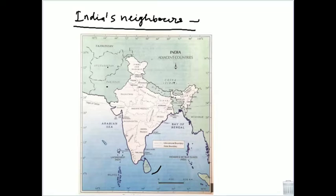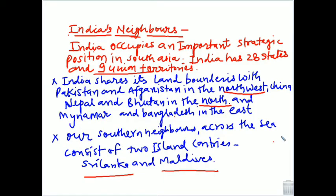India occupies an important strategic position in South Asia. India has 28 states and 9 Union Territories. India shares its boundaries with Pakistan and Afghanistan in the northwest, China, Nepal, and Bhutan in the north, and Myanmar and Bangladesh in the east. Our southern neighbors across the sea are two island countries — Sri Lanka and Maldives.